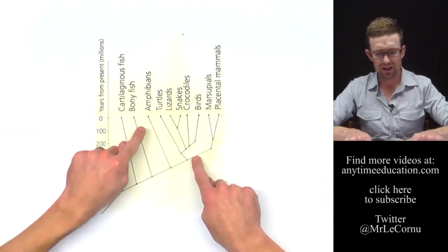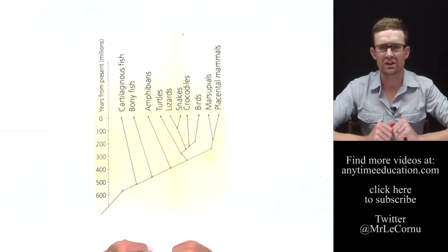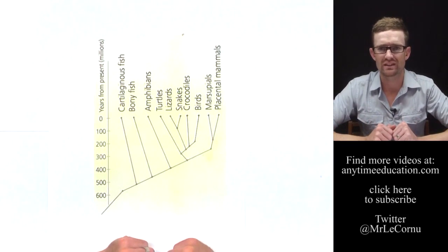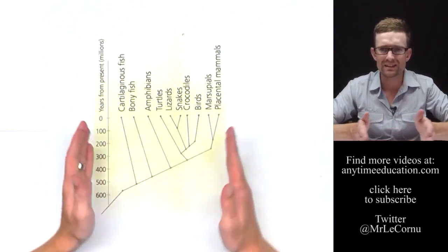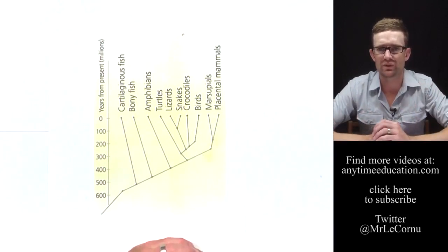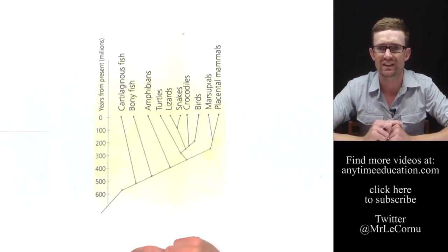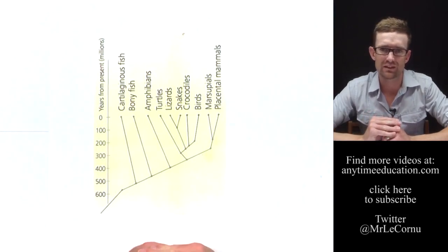Over time, they have split away from each other and branched off into separate species. And over that time, the reason that they have separated into different species is because there have been changes in their DNA that have made them different and so different that they're now different species.